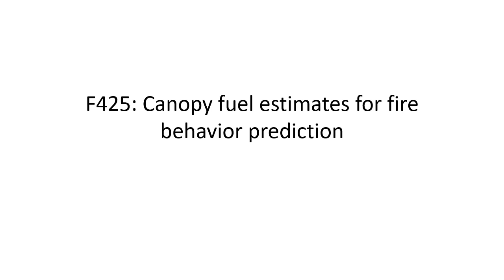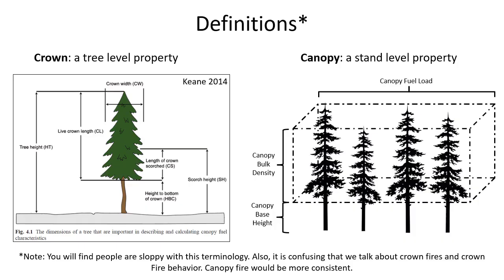We've talked about modeling crown fire behavior, and today we're going to run through methods of quantifying canopy fuels specifically for fire behavior prediction. The two most important parameters in crown fire initiation and spread are crown base height, in terms of quantifying ignition, and crown bulk density, which is important for predicting critical crown fire rate of spread.